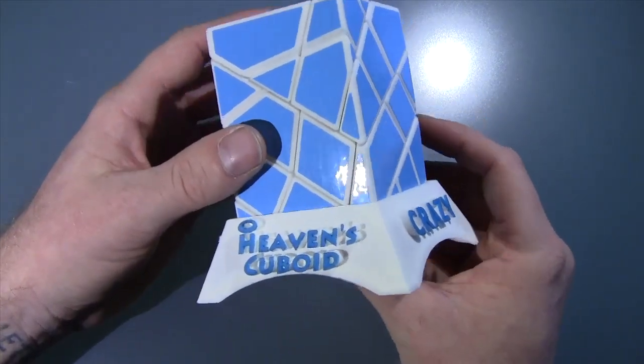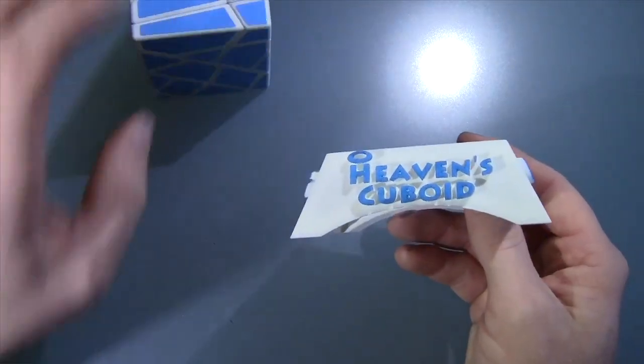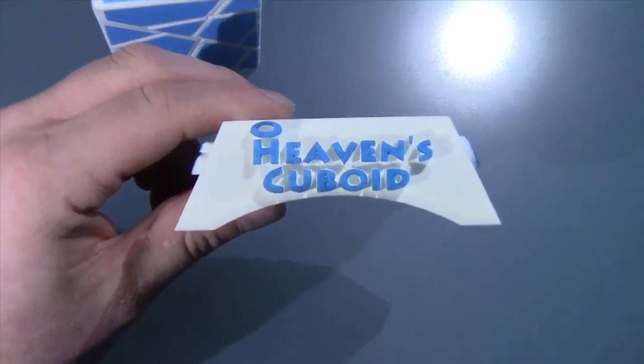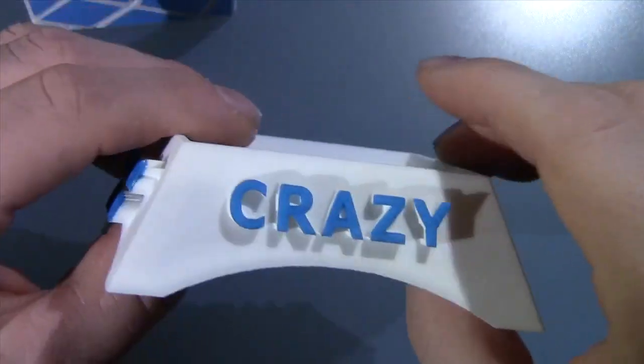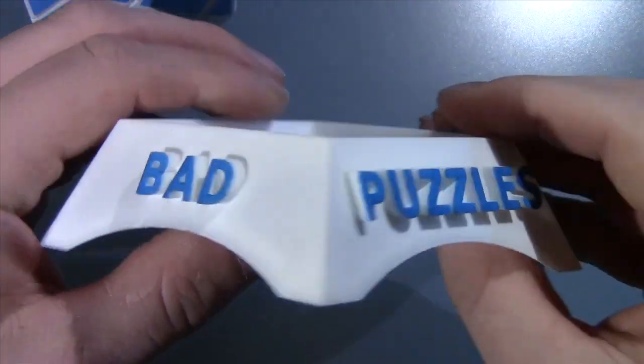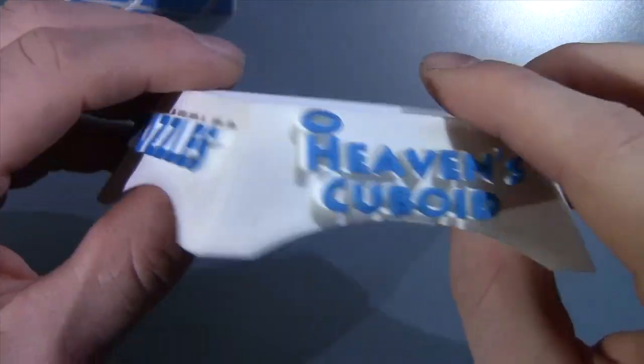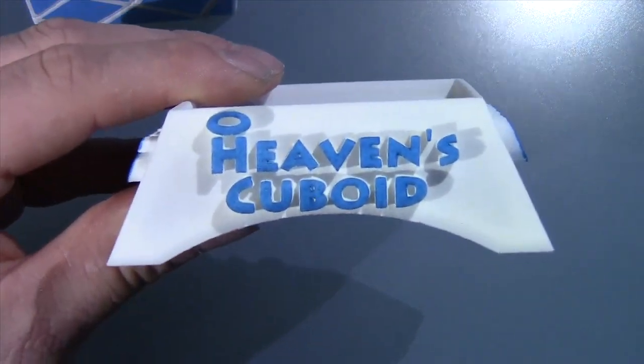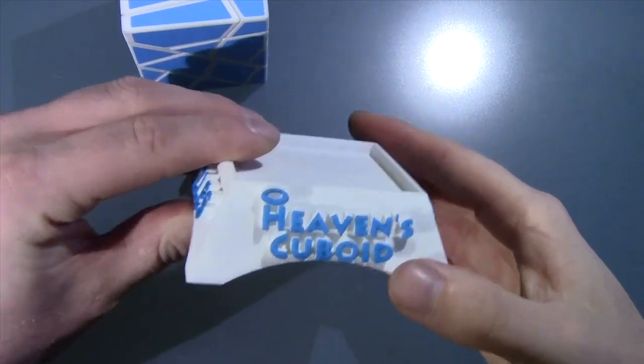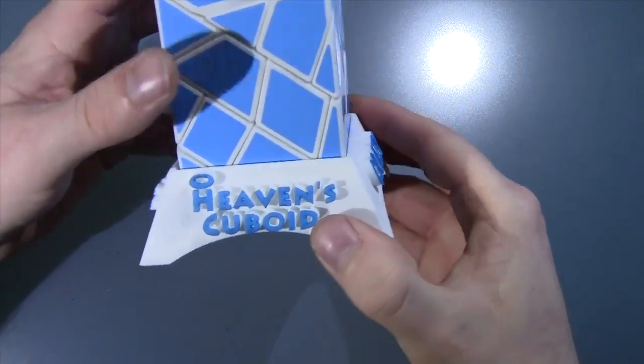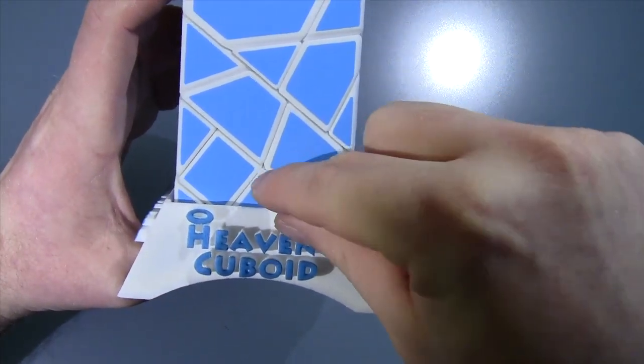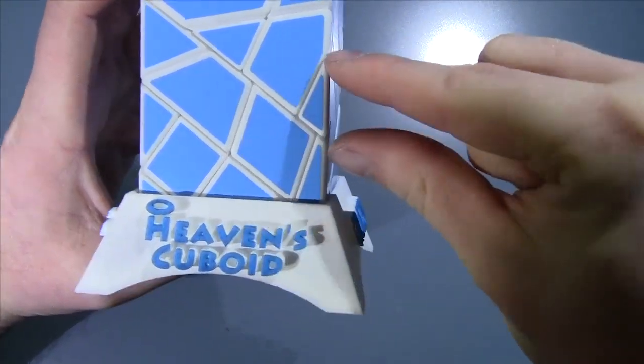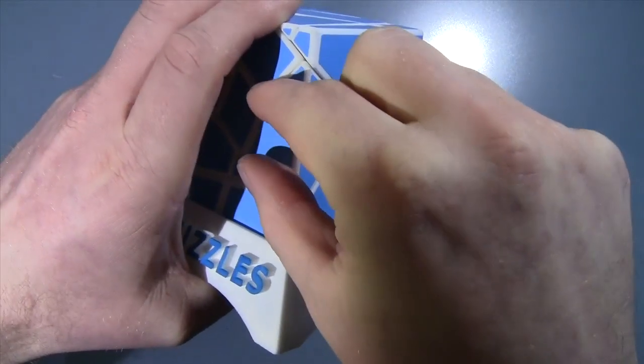Alright, so obviously you can see that it's got a stand. The stand was designed very well. It says Heavens Cuboid with a halo, and on the side it says Crazy Bad Puzzles, which is the brand of my Shapeways shop. When I initially had the idea for the stand, I wanted it to be a little bit more eccentric—I wanted angel wings to come up the side and wrap around the puzzle on each side a little bit.